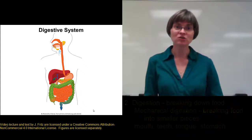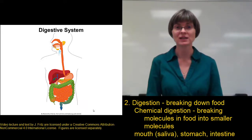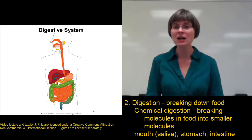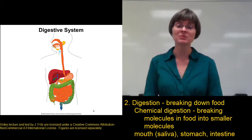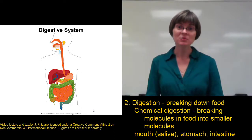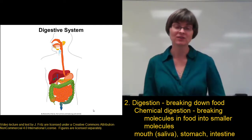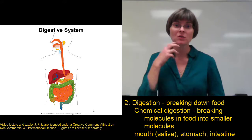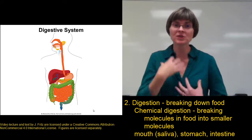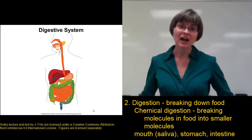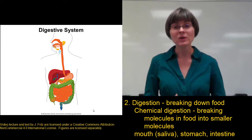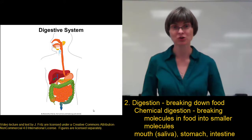The other part of digestion is chemical digestion. Chemical digestion refers to actually taking the molecules in the food and breaking them down into smaller molecules. This process happens throughout a lot of the digestive system, including in the mouth, where saliva contains enzymes to break down molecules, and in the stomach, and a lot of it occurring in the small intestine, even into the large intestine, where we continue to have some chemical digestion.